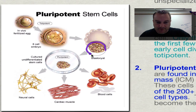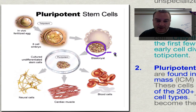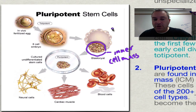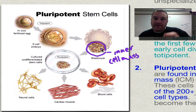This blastocyst has a clump of cells on the inside called the inner cell mass. The cells on the outside are going to form things like the placenta and the amniotic sac, but this cluster of cells — the inner cell mass — is going to become you, if this was a human embryo.